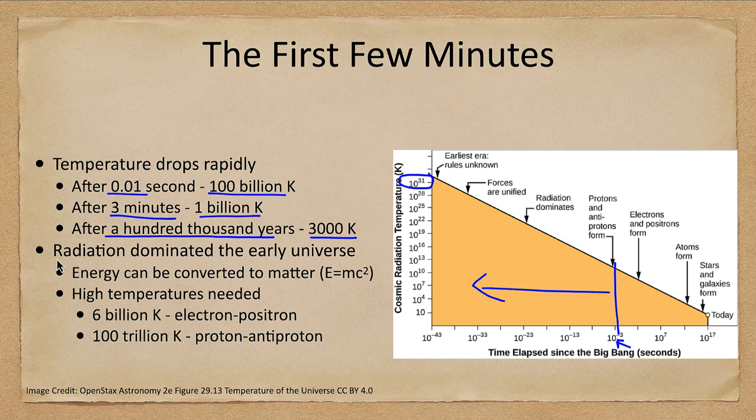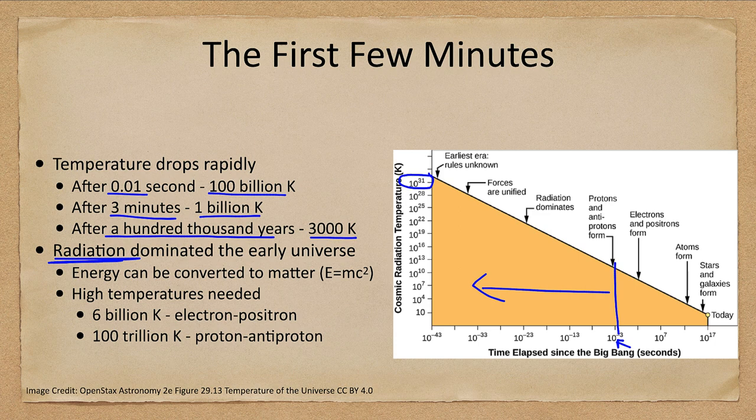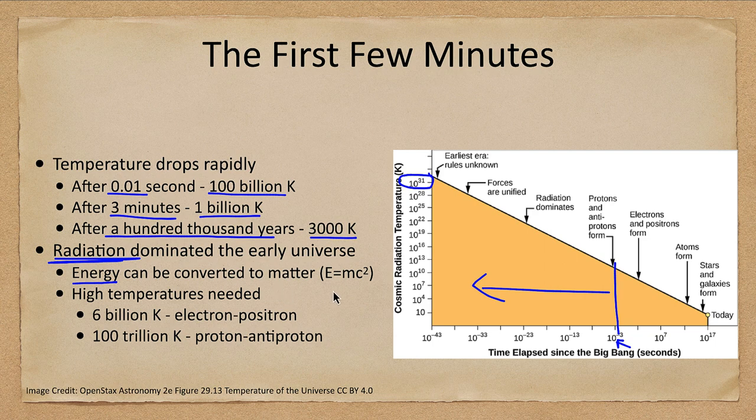In this very early universe, radiation dominated everything. As we know, matter can be created into energy, but also energy can be created to matter. Under these extreme circumstances, energy and matter are interchangeable—matter can become energy, energy can become matter. However, in order to convert energy into matter, very high temperatures are needed.